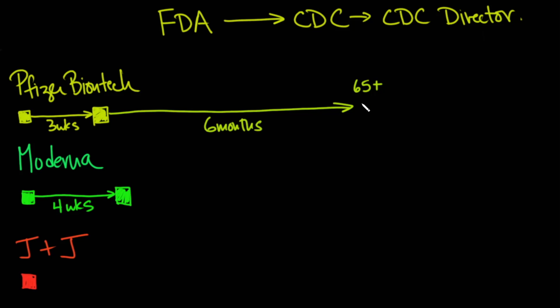Or 18 to 64 years of age and at high risk, so they have a comorbidity, or they are frequently exposed. So that would be like a healthcare provider or somebody working in an environment where they're exposed often to COVID-19 or SARS-CoV-2 positivity.